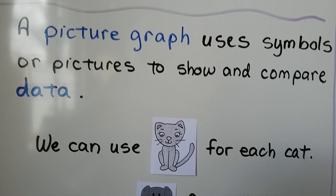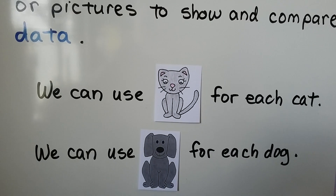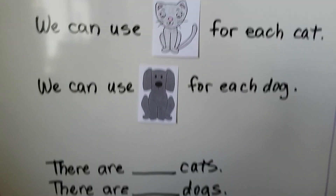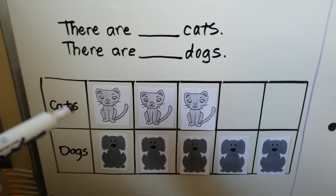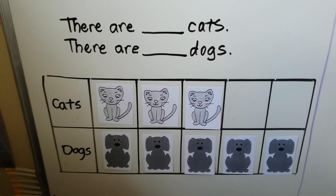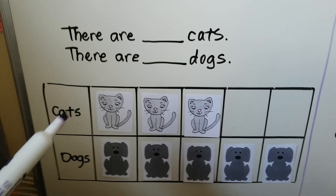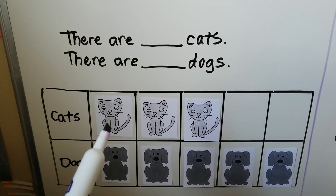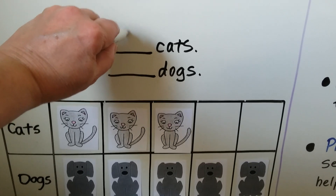We can use a little picture of a cat for each cat, and we can use a little picture of a dog for each dog. In our picture graph, we can answer questions by the information that is shown. Here's cats. If each picture is a cat, there are one, two, three cats. There are three cats.